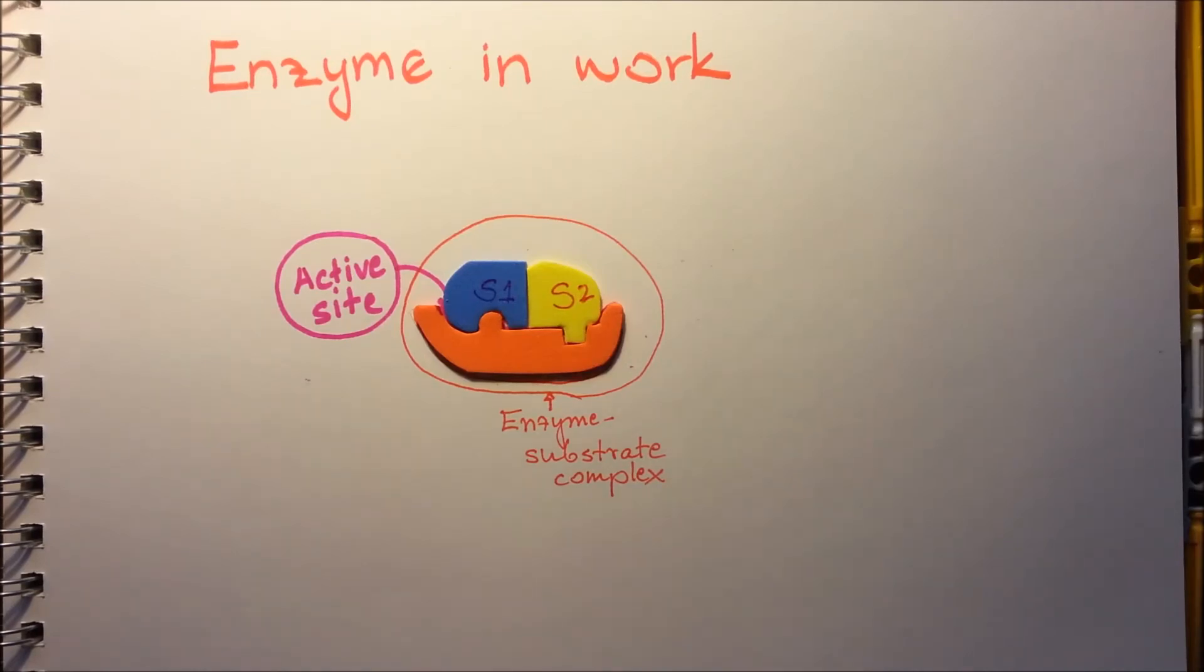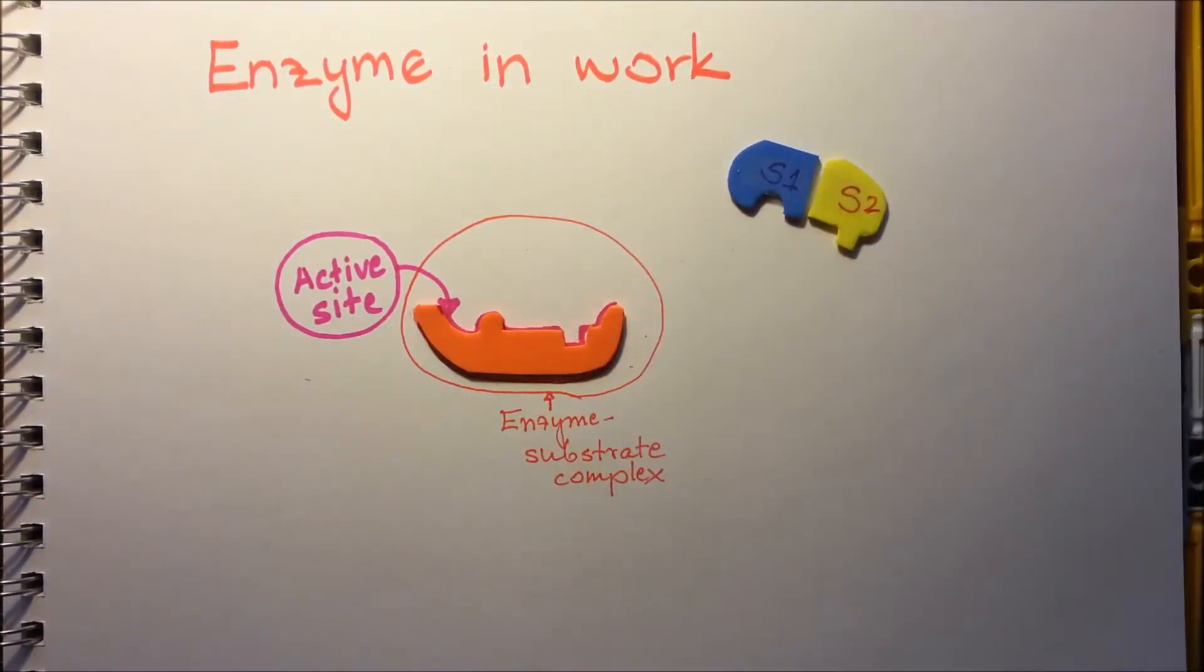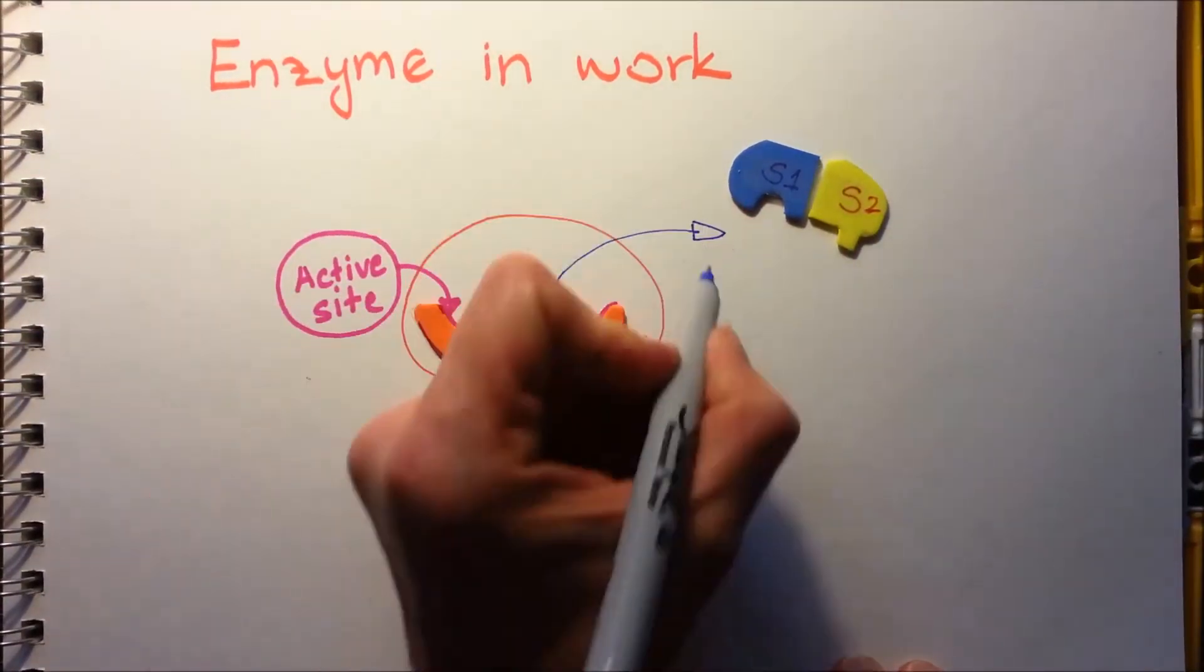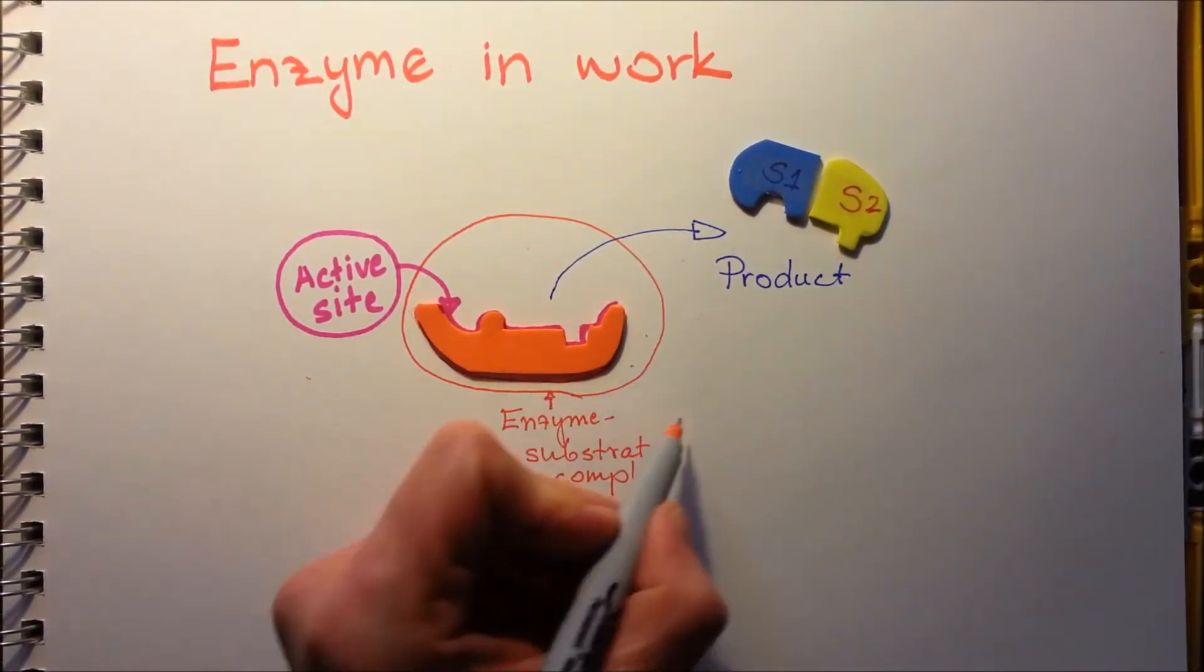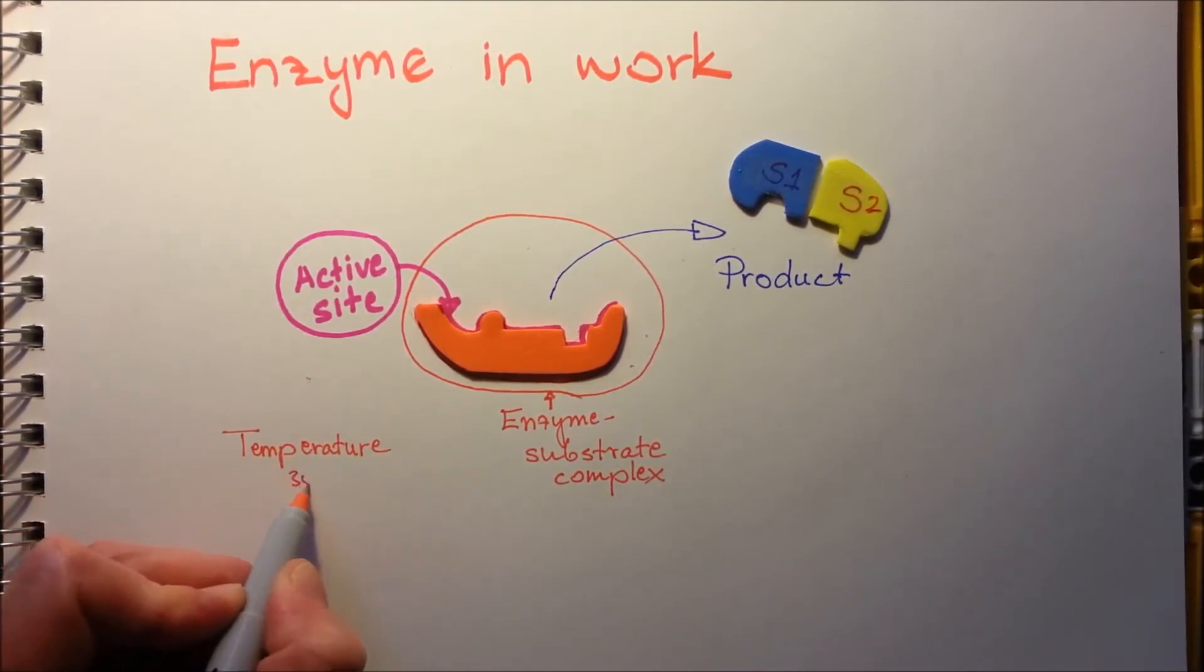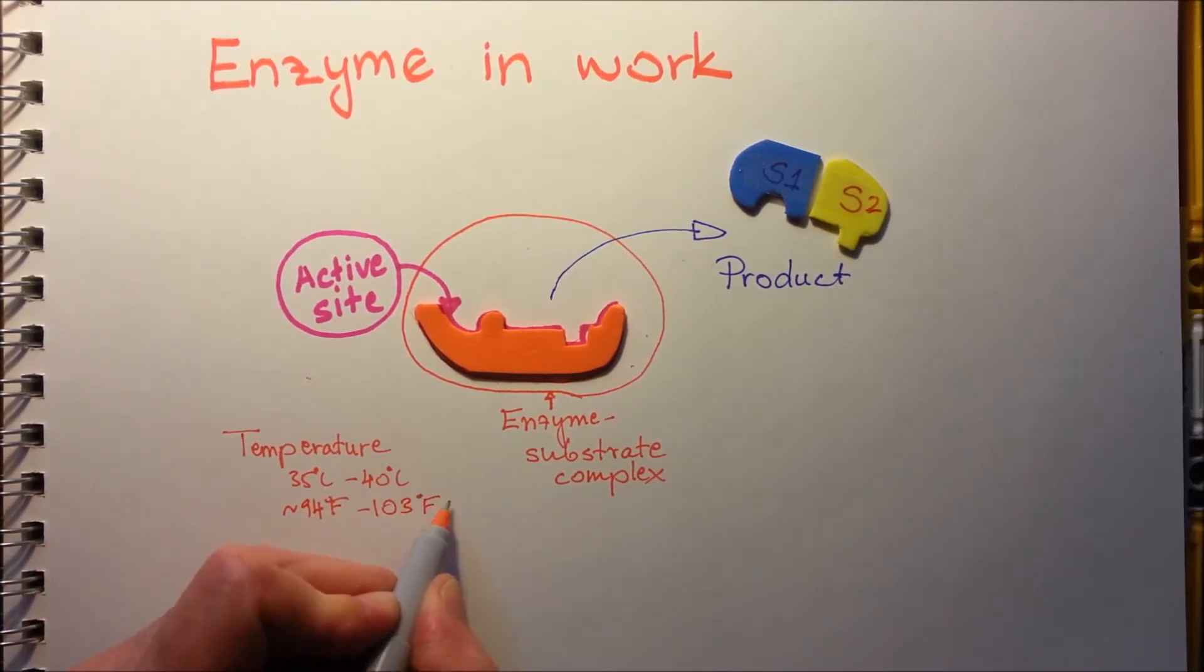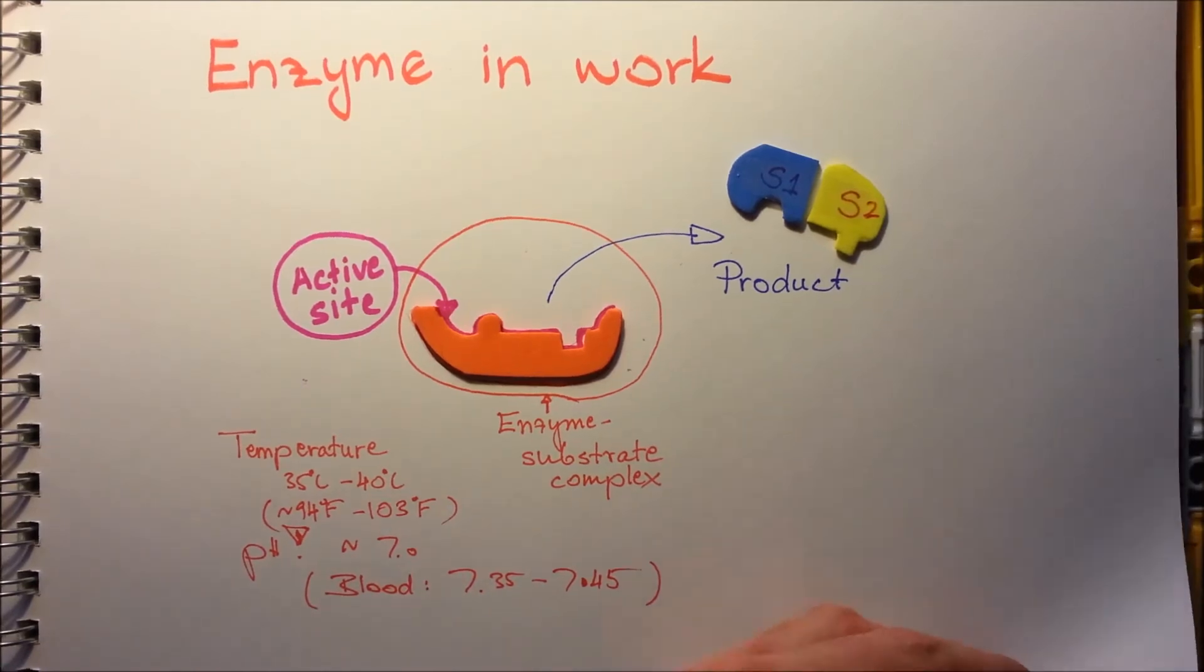When the reaction happens, the enzyme stays behind without any change, and the product will leave the enzyme. For every enzyme, there are optimal conditions under which it is most effective. Temperature is really important. In our body, the body temperature, as well as the pH is usually around 7. But as we stated, the blood is a little bit alkaline, so 7.35 to 7.45.